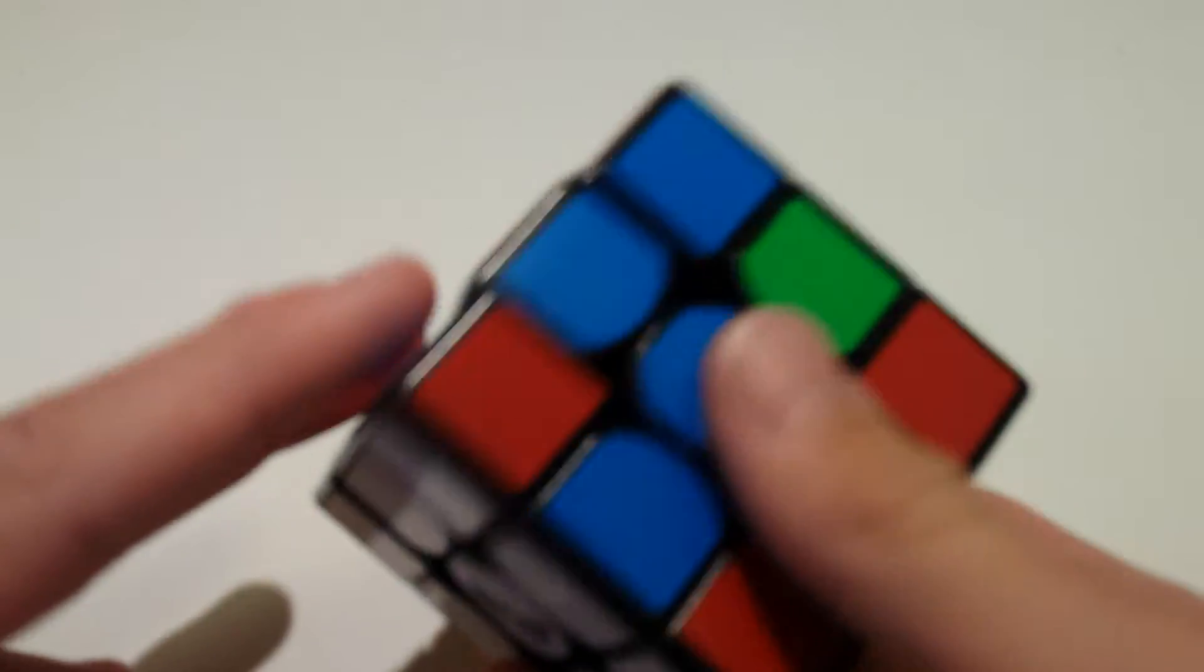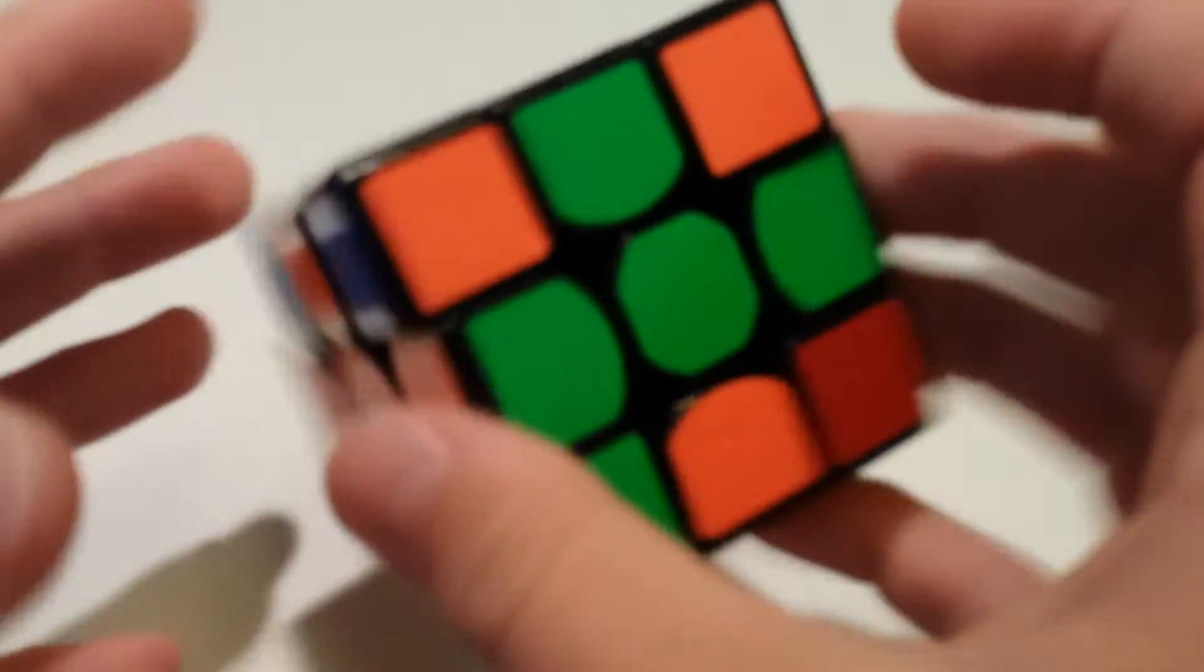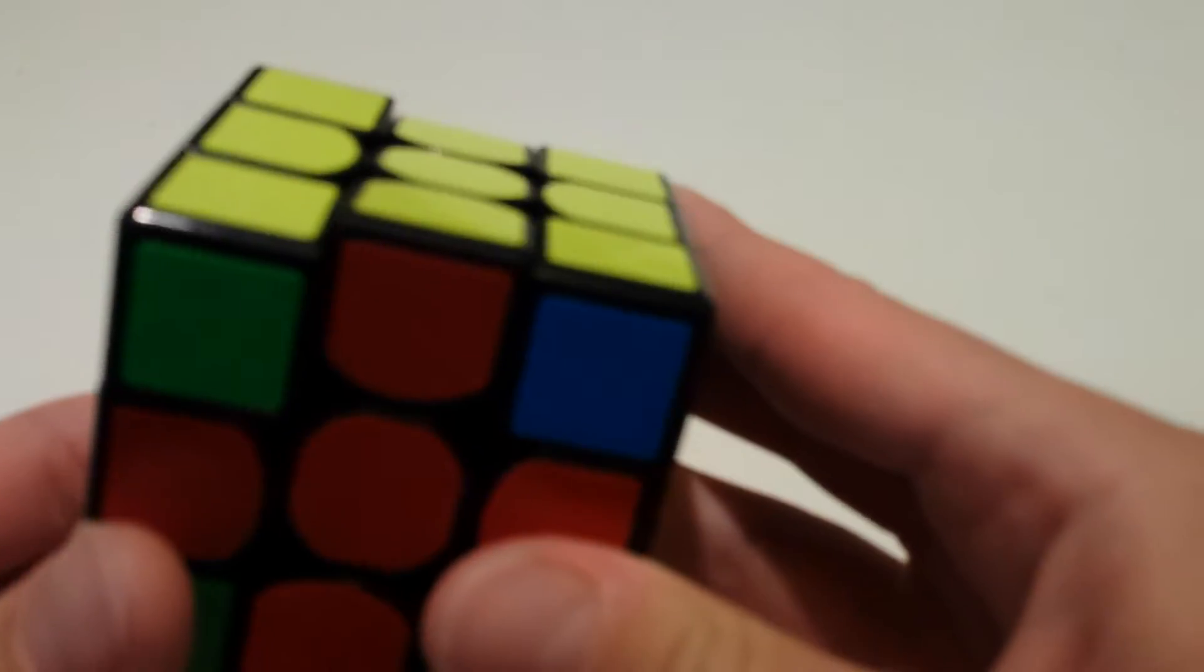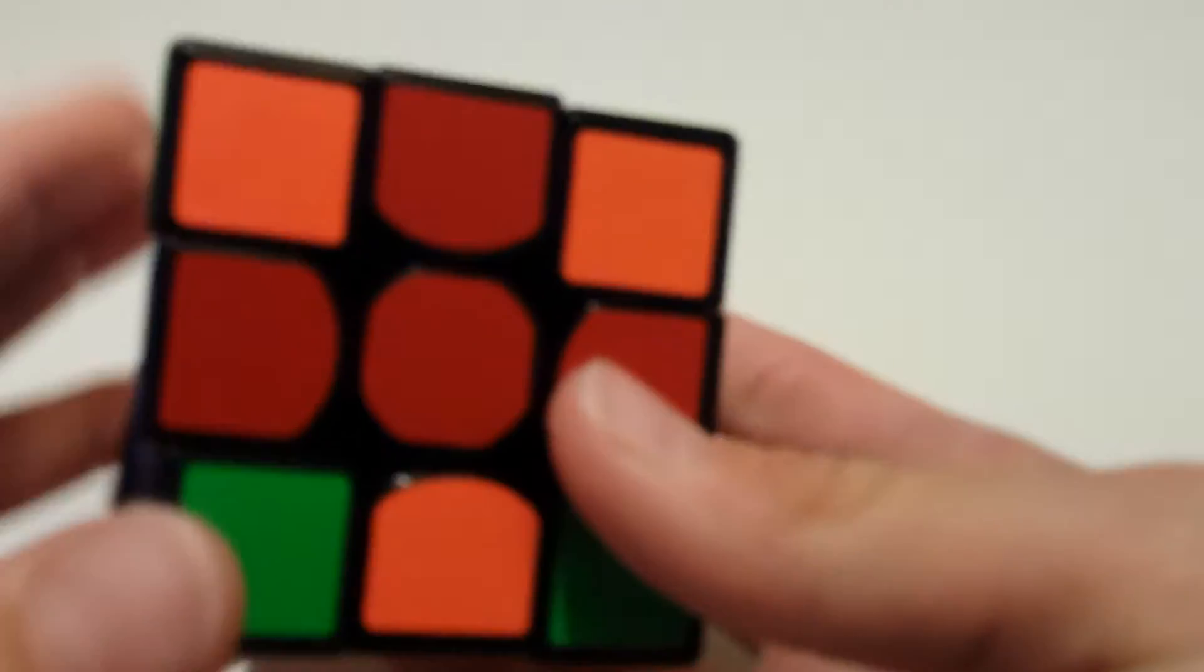You can see this right here cannot happen if this were solved. And this cannot happen if this were solved. So then you just want to do M2, U2, M2. And then that will take you out of parity.